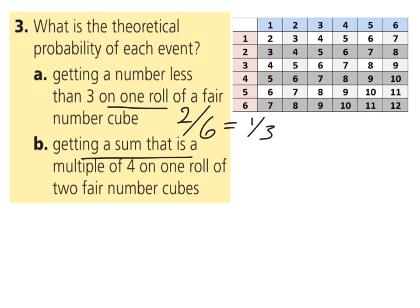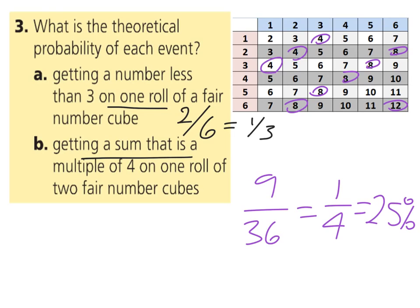Getting a sum that is a multiple of four on one roll of two fair number cubes. A multiple of four, we would be looking at either fours, eights, or a twelve. It looks like if we count those up, there are nine different favorable outcomes out of the 36. That turns out to be one-fourth, which we all know is 25%.